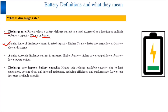What about the A rate? The A rate is the absolute value of the discharge current in amperes. For example, if a battery has a discharge current of 50 amperes, the A rate is 50 amperes.